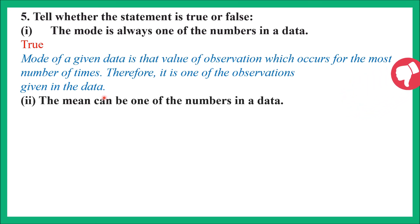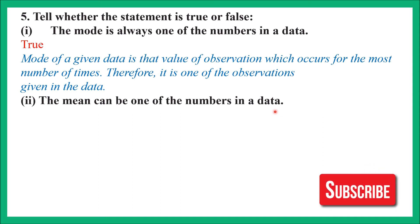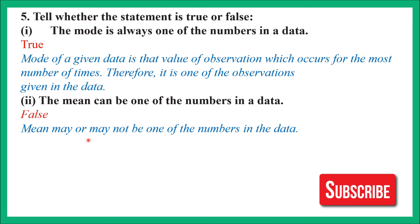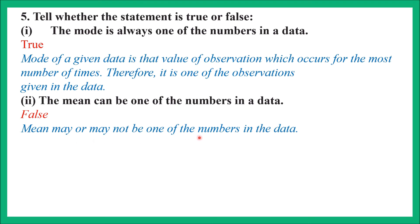Part 2: 'The mean can be one of the numbers in the data.' This is false. Mean may or may not be one of the numbers in the data. Since mean = sum of observations ÷ number of observations, it may or may not be part of the data. So this statement is false.